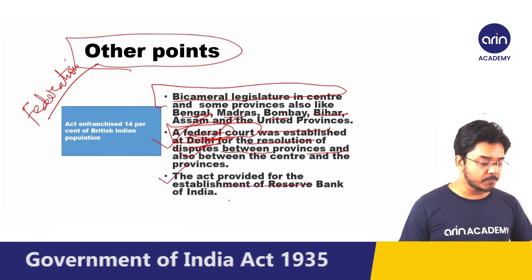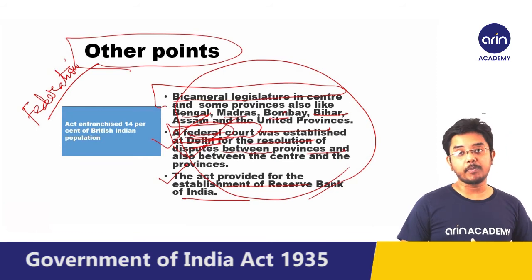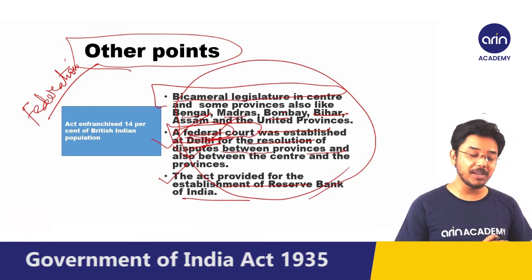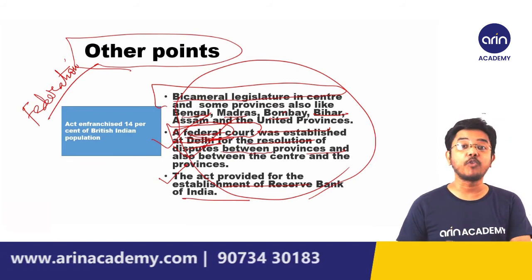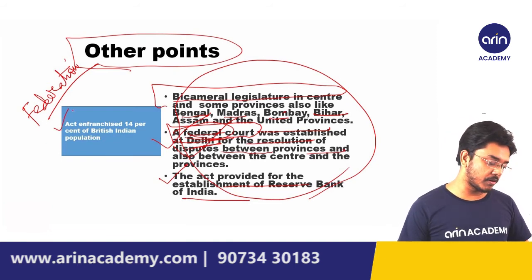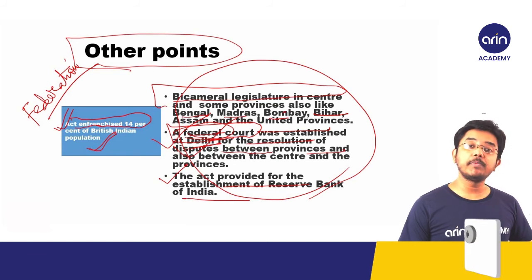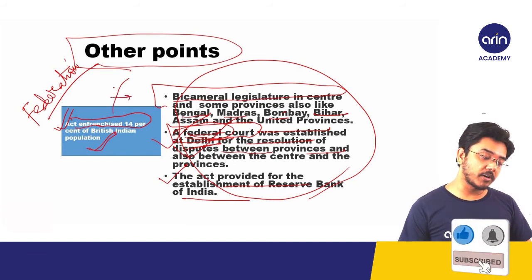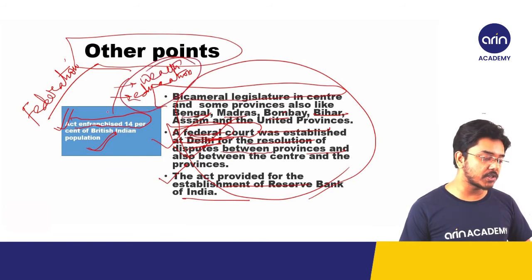The Act also provided for the establishment of the Reserve Bank of India. Regarding the franchise, 14% of the population was eligible to cast their votes at that time, based on two important parameters: education and wealth.